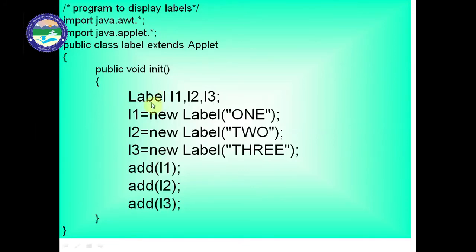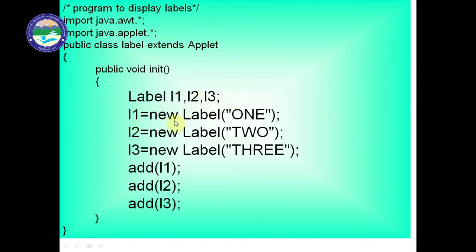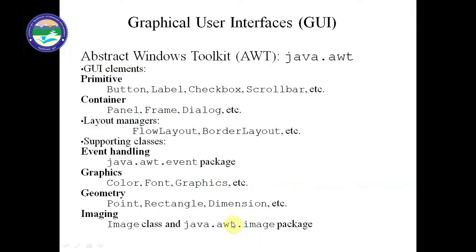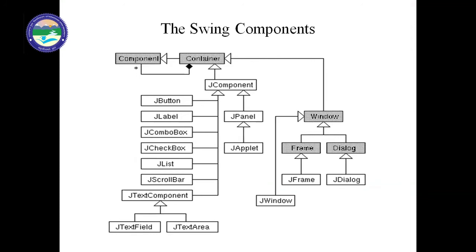In the previous class we discussed a program where we have three labels: l1, l2, and l3, which we attach to the applet. We write: public class Label extends Applet, import java.awt.* and java.applet.*. Inside the init function, we define label objects: l1 = new Label('1'), l2 = new Label('2'), l3 = new Label('3'), then add(l1), add(l2), add(l3) to add all labels.